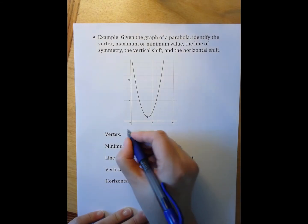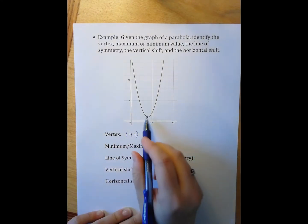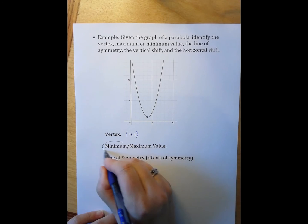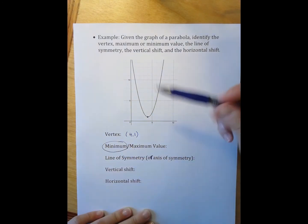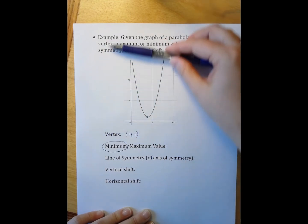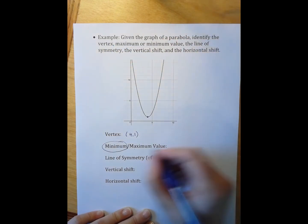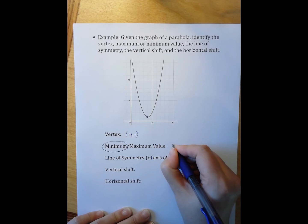It's the vertex, which is at four comma one. And it occurs at the bottom, which makes it a minimum. And the minimum is either the highest or the lowest, which means I'm looking at a y value. So the minimum value is one.